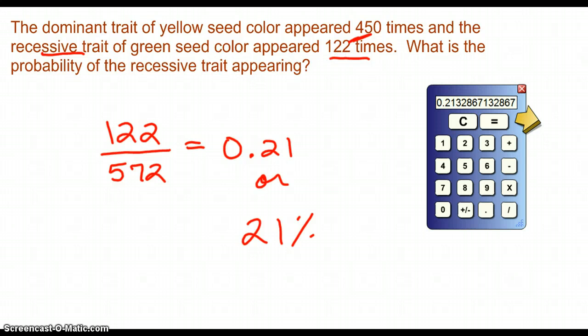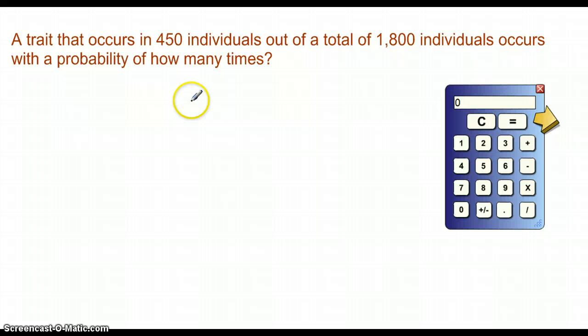Let's try one more, and then that'll be it. A trait that occurs in 450 individuals out of a total of 1,800 individuals occurs with the probability of how many times? That's a simple setup that gave me the numbers. I don't have to do any adding.